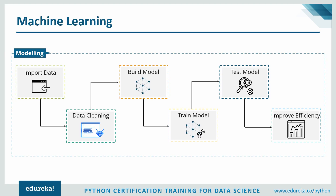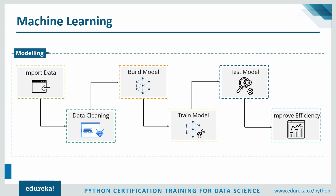Machine learning begins with importing your data. The data already gathered in previous stages is imported for the machine learning process, and it must be in a readable format — such as a table format or comma-separated values. After importing the data, the next step is data cleaning. Data cleaning is a very iterative process — you cannot just clean everything at once. After importing, you might notice duplicate values or missing/null values, and such inconsistencies can cause wrongful predictions, so they must be removed at this stage.